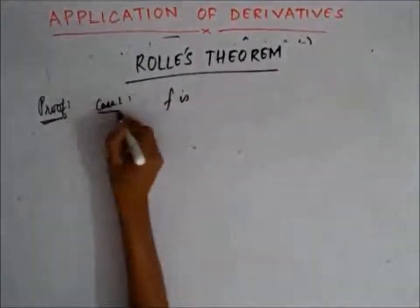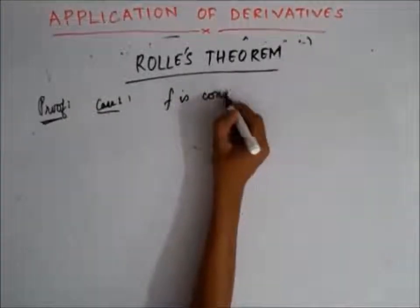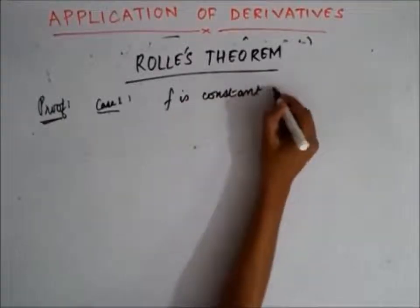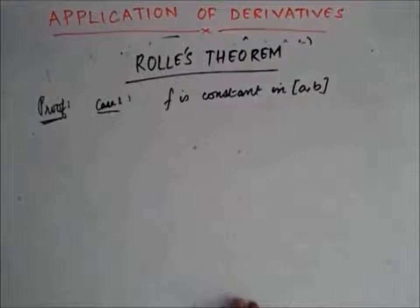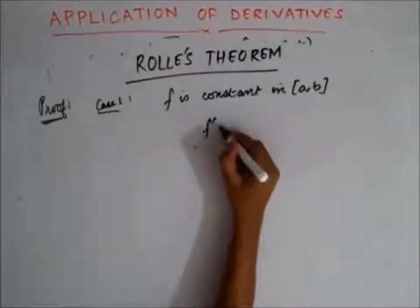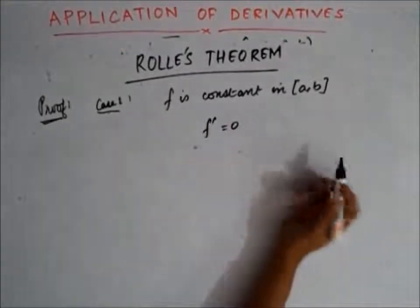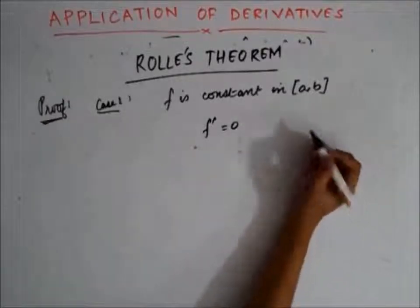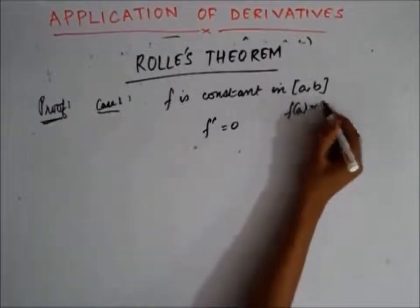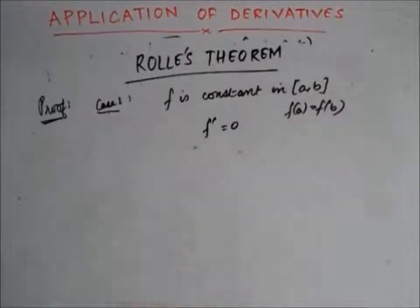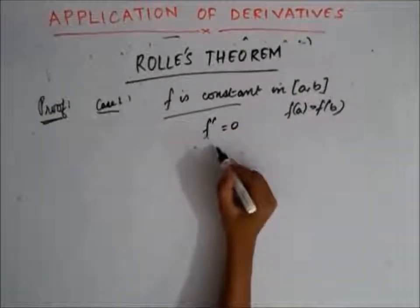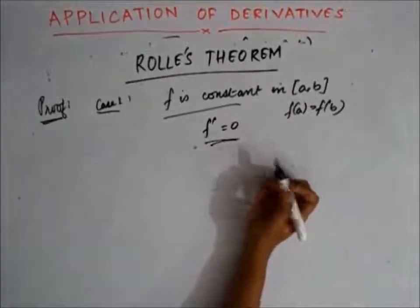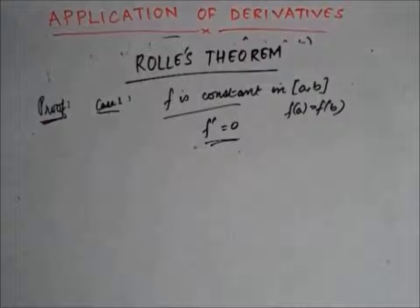Case 1: f is a constant function over the whole interval a to b. If f is a constant function, the derivative of f is always 0. So Rolle's theorem is satisfied — f(a) equals f(b), and the conclusion that f'(c) must be 0 holds since f'(c) is always 0 for a constant function. Rolle's theorem is verified in this case.